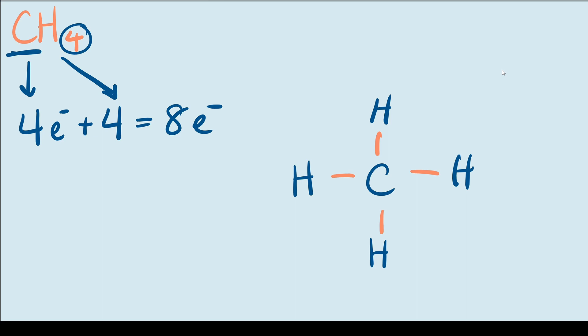Now each of these single bonds represents two electrons and you can see here that we have four single bonds. So that gives us eight total electrons. So we started with eight electrons that we needed to use up and we already used all of them up drawing these single bonds, so we don't have any extra electrons to put on this molecule and that means this is the final structure of CH4.